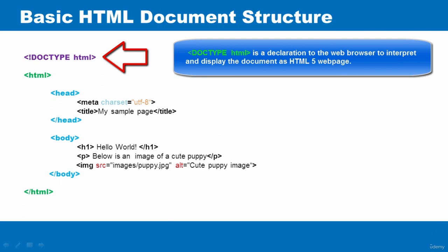You always have to add the DOCTYPE declaration to the very top of your document so the web browser knows what type of document to expect and can render it correctly. I have written the DOCTYPE in uppercase, but it is not case sensitive, so you can write it in lowercase too. You write it as: less-than sign, exclamation mark, DOCTYPE, space, HTML, then a greater-than sign.